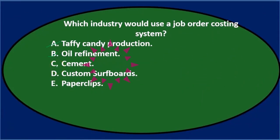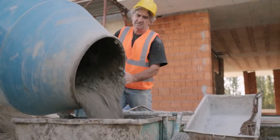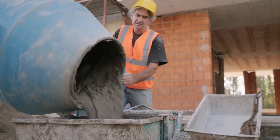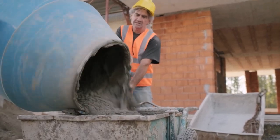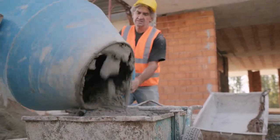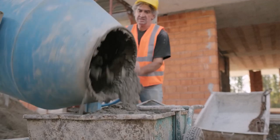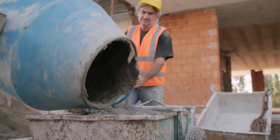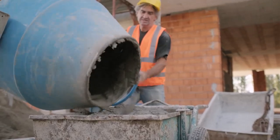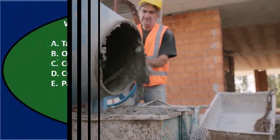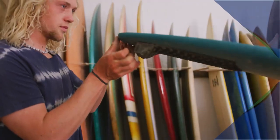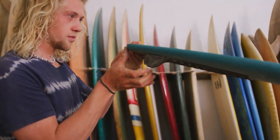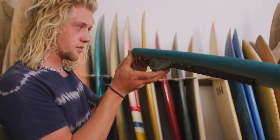Generally we want consistency in the end product. Cement production would be the same kind of thing — we don't really want differentiation in the cement. We want it all to be the same with one production process, so cement would be a process cost. Option D says custom surfboards, and since that is customized, there's going to be differentiation.